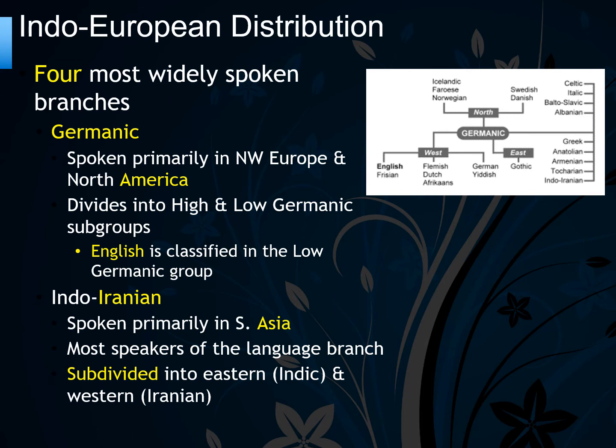The Indo-Iranian branch is found mainly in South Asia. Most speakers are subdivided into the Indic group — mainly languages found in India and Pakistan — and the Western group, mainly Iranian, with Farsi being the main Iranian language.